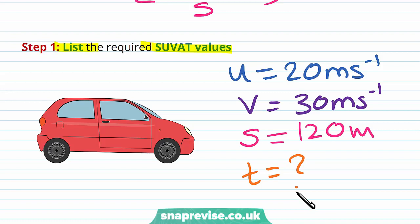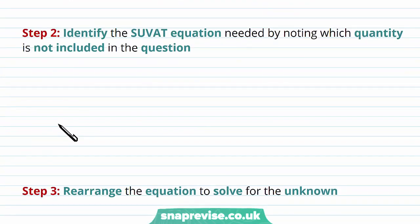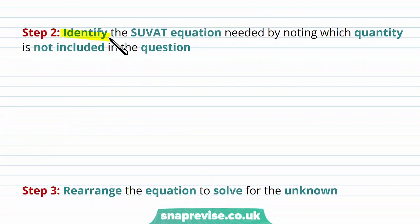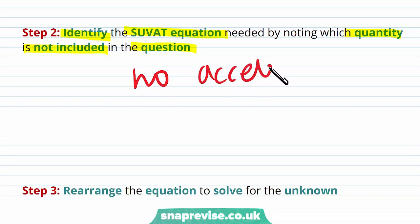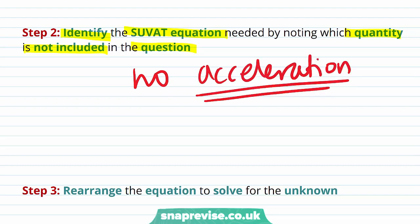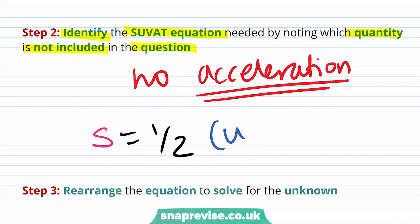The SUVAT values we have do not include acceleration. Our next step is to identify the SUVAT equation needed by noting which quantity is not included in the question. We have no acceleration, so we're going to use the SUVAT equation: s = ½(u + v)t.